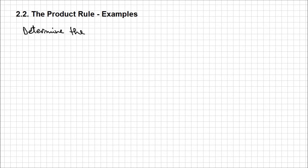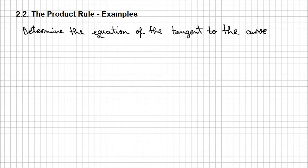Hello. There is this type of problem that is very common, used at pretty much every lesson where we calculate derivatives. I'm going to ask you to determine the equation of the tangent to the curve of this function defined by y, which is x squared minus 3, times x squared minus 7x plus 2, when x equals 1.